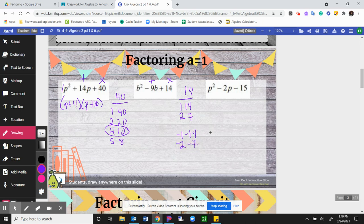So if we look here, it needs to be adding up to a negative 9, so we need a negative 2 and a negative 7 to add up to negative 9. So my answer there would be B minus 2 and then B minus 7.